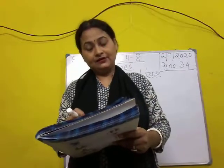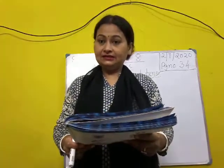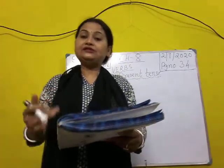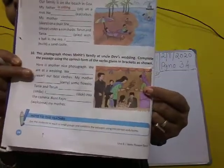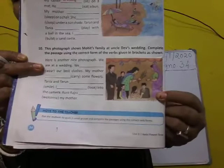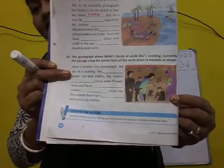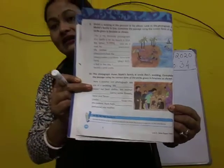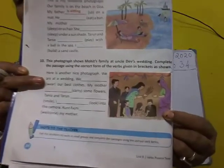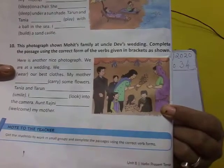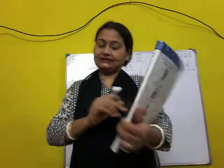Complete the passage using the correct form of verbs given in the brackets, as shown. The verbs are given in the bracket and we have to use the correct form. Here also we will describe this photograph — we can see a bouquet of flowers. When you go to marriage parties or any birthday party, we carry a bouquet.